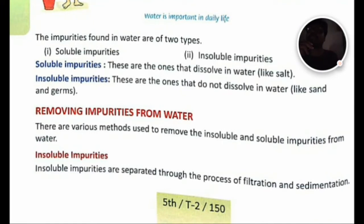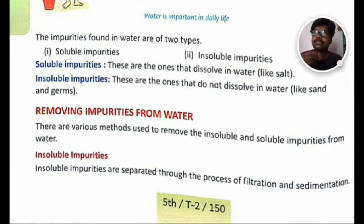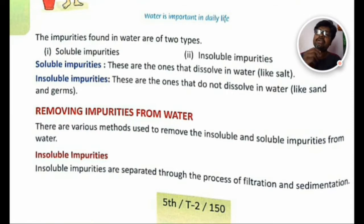The impurities found in water are of two types: soluble impurities and insoluble impurities. Soluble impurities are the impurities which are already dissolved in water — they can dissolve or are already dissolved in water.